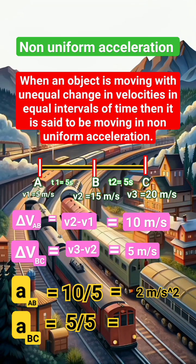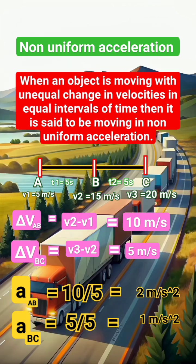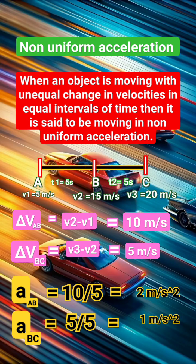If you observe here, the change in velocities are different but the time intervals are same. If you find the acceleration values, we get acceleration values also different. So it is called non-uniform acceleration.